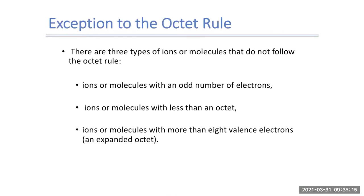There are three types of exceptions. First, if our ion or molecule has an odd number of electrons. Second, if our ion or molecule has less than an octet. And finally, if the ion or molecule ends up with more than an octet — more than eight valence electrons around it. This is also called an expanded octet.